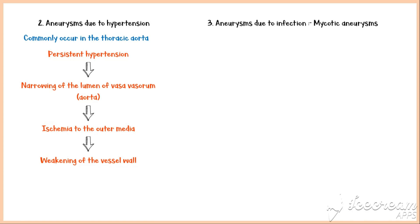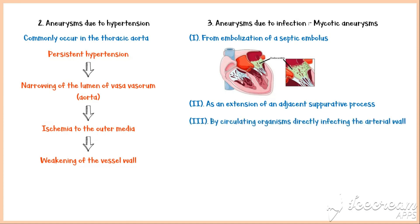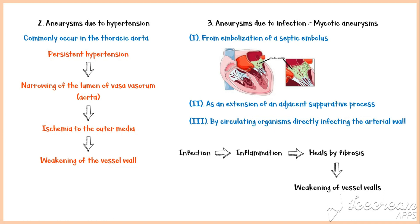Aneurysms due to infections are known as mycotic aneurysms. They can originate in three ways: from embolization of a septic embolus, usually as a complication of infective endocarditis; as an extension of an adjacent suppurative process; or by circulating organisms directly infecting the arterial wall. Aneurysm formation is a long-term complication of the infection, because infection causes inflammation of the vessel, which ultimately heals by fibrosis, causing the arterial wall to become weakened, predisposing to aneurysm formation.